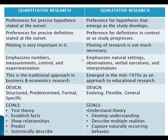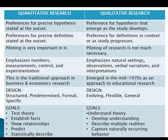Looking at the main differences: for hypothesis, quantitative research has a preference for a precise hypothesis stated at the outset, whereas qualitative research has a preference for a hypothesis that emerges as the study develops. These days hypothesis is written mainly for quasi-experiments and experiments, whereas in qualitative research hypotheses are no longer required. Previously it was conceived that qualitative research could have a hypothesis that develops as the study moves on.